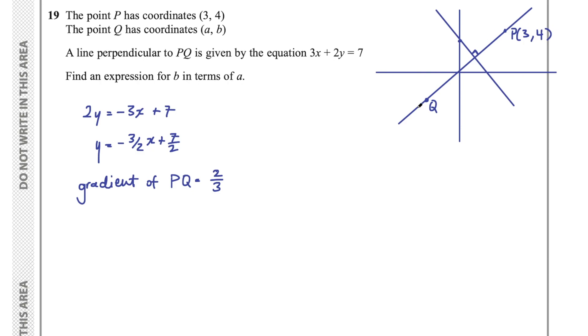Now we have the gradient of PQ, we have a point on that line. That's all we need to find the equation of a line. We can start off by saying the equation of PQ will look like this, y equal to... Well, firstly, let's write out y equals mx plus c, m being the gradient.